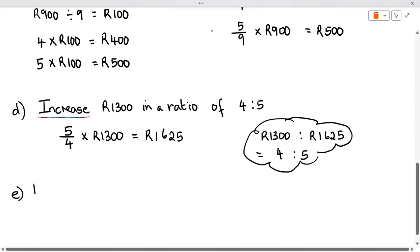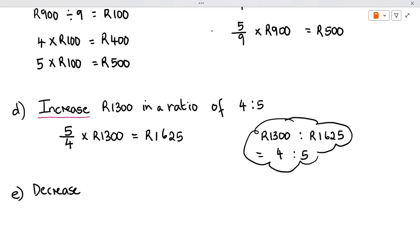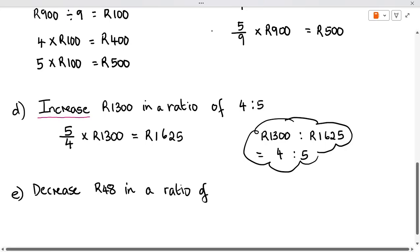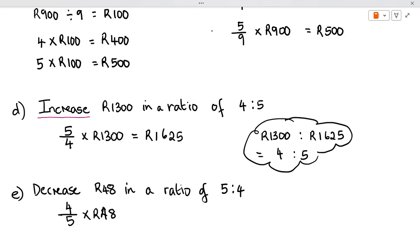If we said decrease, and let's use a different value here, let's say decrease 48 in a ratio of 5 to 4. Decrease 48 Rand in a ratio of 5 to 4. Now, if I'm saying decrease, I expect my answer to be smaller. And above where I said increase, you'll notice that your answer is bigger. So here we're going to go 4 divided by 5 times 48.